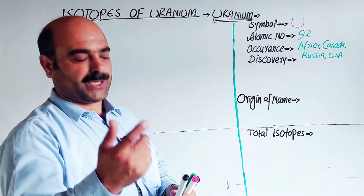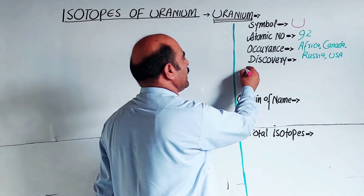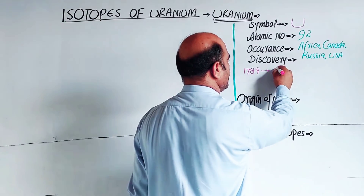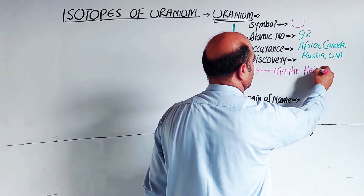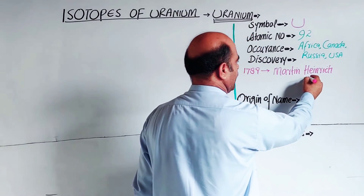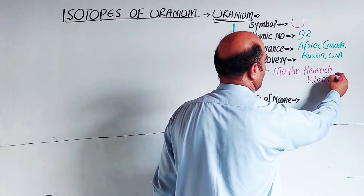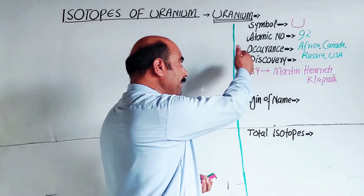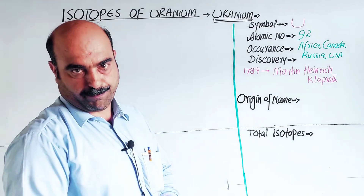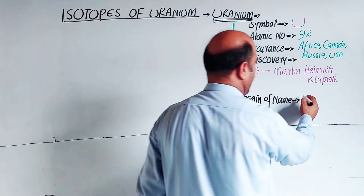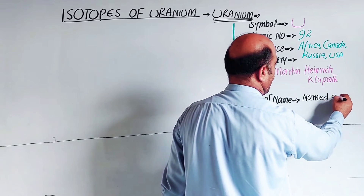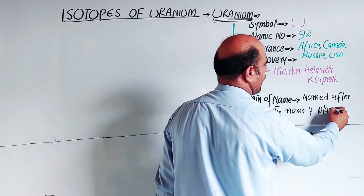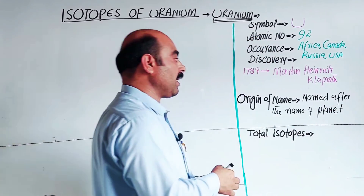Next, uranium was discovered in the year 1789 by a scientist named Martin Heinrich Klaproth. Martin Heinrich Klaproth discovered uranium in 1789. The origin of the name uranium comes from this scientist naming the element after the planet Uranus.